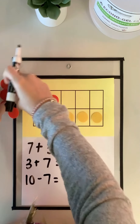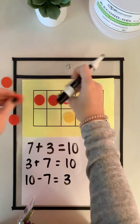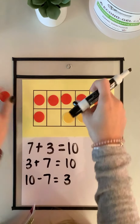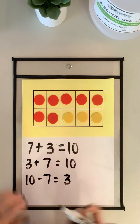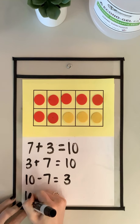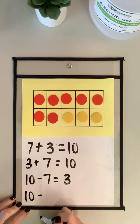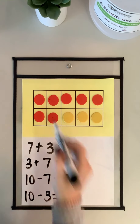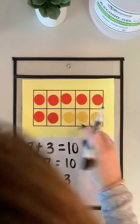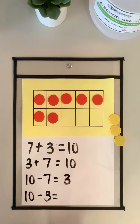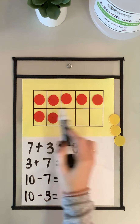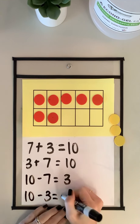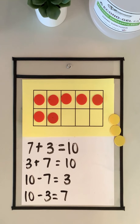Let's try it one more time. This time I'm gonna start with 10, my biggest number again, because I'm subtracting — but instead of taking away 7, I'm gonna take away 3 this time. I have 10 and I'm gonna take away 3. How many am I left over with? I have 7 left over.